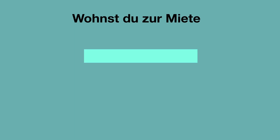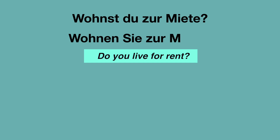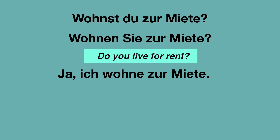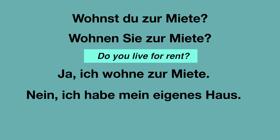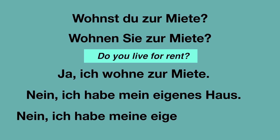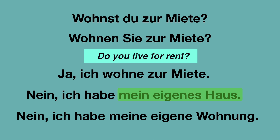Wohnst du zur Miete? Wohnen Sie zur Miete? Und die Antwort: Ja, ich wohne zur Miete. And if you have your own house and don't have to pay rent, you say: Nein, ich habe mein eigenes Haus. If you have your own flat: Nein, ich habe meine eigene Wohnung. Memorize them as chunks: mein eigenes Haus — my own house; meine eigene Wohnung — my own flat.